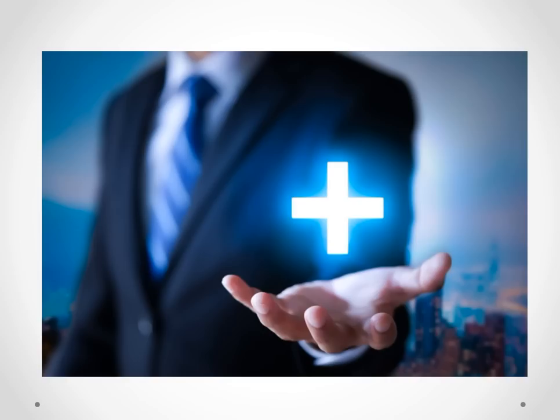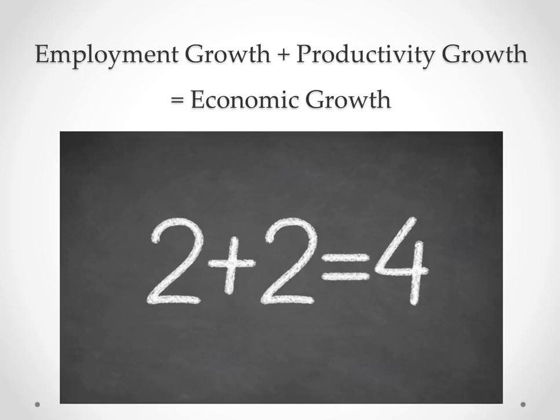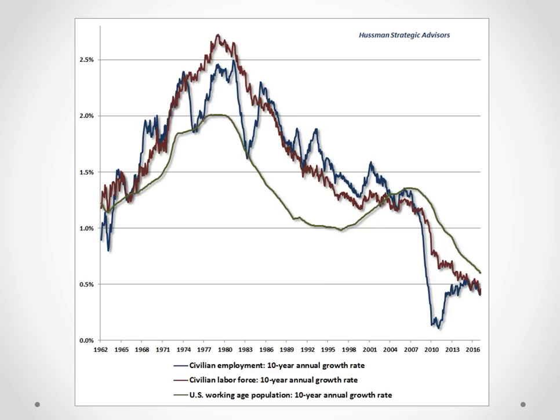Let's talk about economic growth for a minute. The growth of the economy is equal to the sum of two things: growth in the number of people who are employed, and growth in output per worker — what we call labor productivity. For much of the period since 1950, these two drivers contributed about 2% each to real U.S. GDP growth. Now, much of the reason for lower U.S. economic growth in recent decades is that U.S. population growth has slowed substantially. So while the labor force used to add about 2% annually to GDP, it now only adds about one-half of 1%.